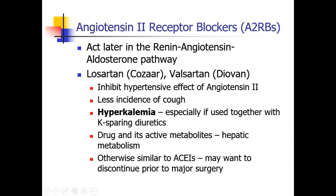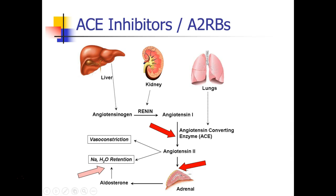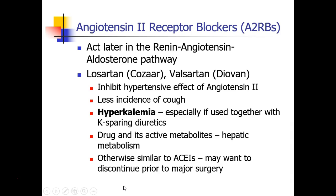Another drug class related to these are the angiotensin-2 receptor blockers. These drugs act just a little bit later in the same pathway — whereas ACE inhibitors act at the conversion step, angiotensin-2 receptor blockers will act here and prevent the action of angiotensin-2, thereby also preventing the synthesis of aldosterone. These include drugs like losartan, which is Cozaar, and valsartan, which is Diovan.